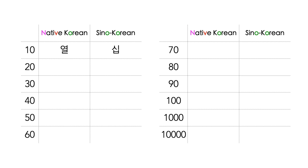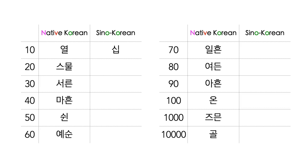Let's go over numbers in tens and hundreds. In native Korean: 20 is 스물, 30 is 서른, 40 is 마흔, 50 is 쉰, 60 is 예순, 70 is 일흔, 80 is 여든, 90 is 아흔.